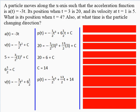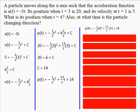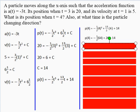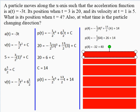Now we can answer what was asked: the position when t = 4. We plug 4 into our position function: p(4) = -(1/2)(64) + (13/2)(4) + 14 = -32 + 26 + 14 = 8. So the position when t = 4 is 8.